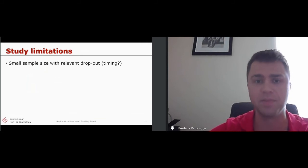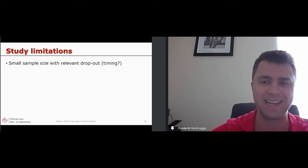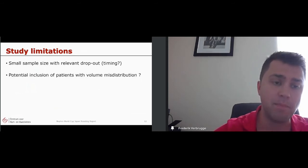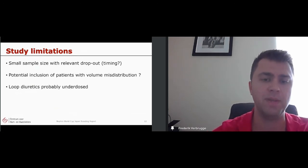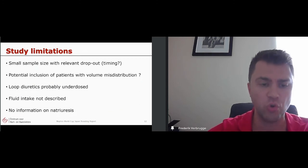So what were the study limitations? It's a small sample size. There was quite some relevant dropout. We don't know exactly what was the timing of this. There might have been also inclusion of patients who didn't have volume overload, but more volume misdistribution. Somebody who had flash-lung edema because of the inclusion criteria of pulmonary congestion could be included. We don't know exactly how much volume overload was present. Therefore, the loop diuretics were probably a bit underdosed. And even after the increase of 100 milligrams, some of the patients with really advanced kidney disease might have underdosed. Normal dose would probably be 160. We also don't know how many gifts there were in both groups. So there is the risk of diuretic resistance because of underdosing of the loop diuretic dose. The fluid intake has not been described and there's no information on natriuresis.